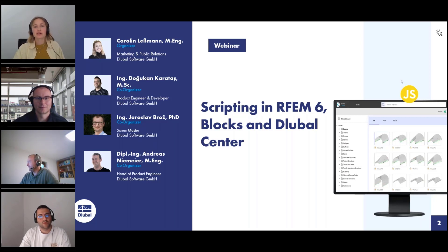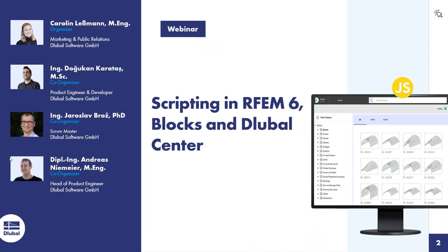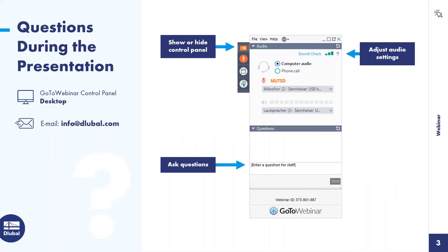Now we can switch off our cameras so everyone can see the full screen. We always encourage everyone to ask questions throughout the presentation. On the right side of your screen you have the control panel where you can ask your questions. If we don't get to all questions, we'll send you a follow-up email. You can also watch the entire webinar and send questions to info.global.com afterwards.